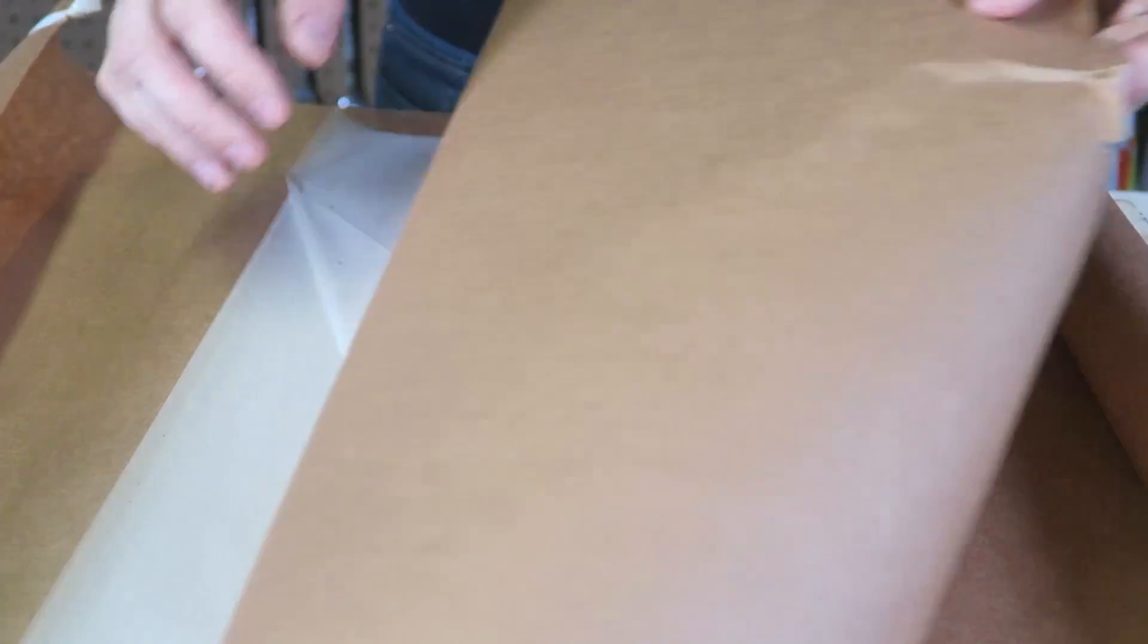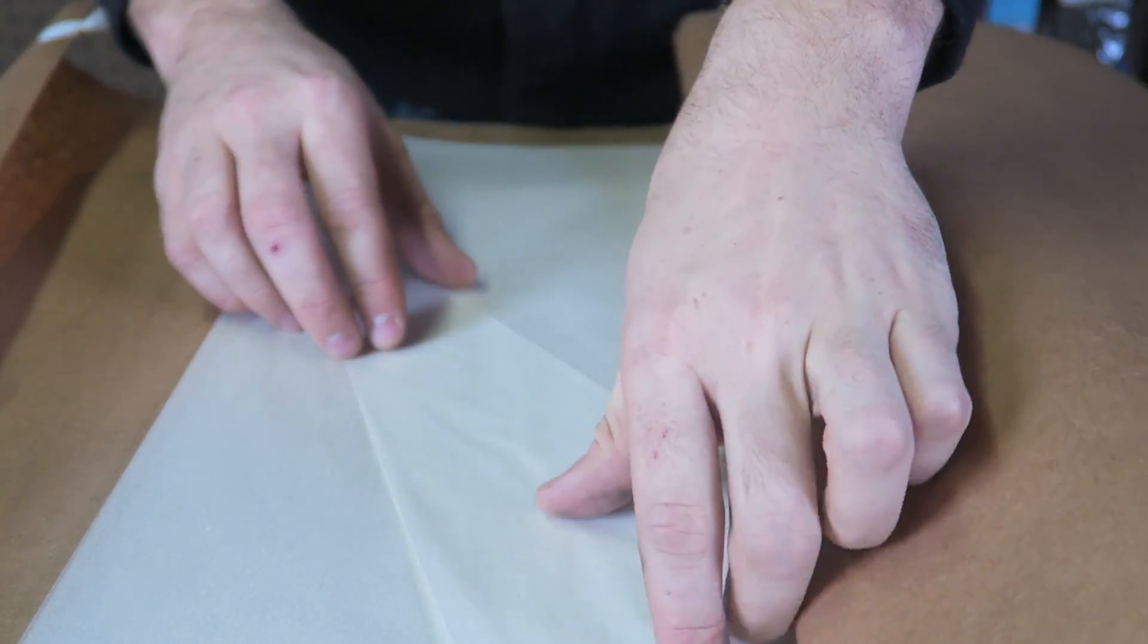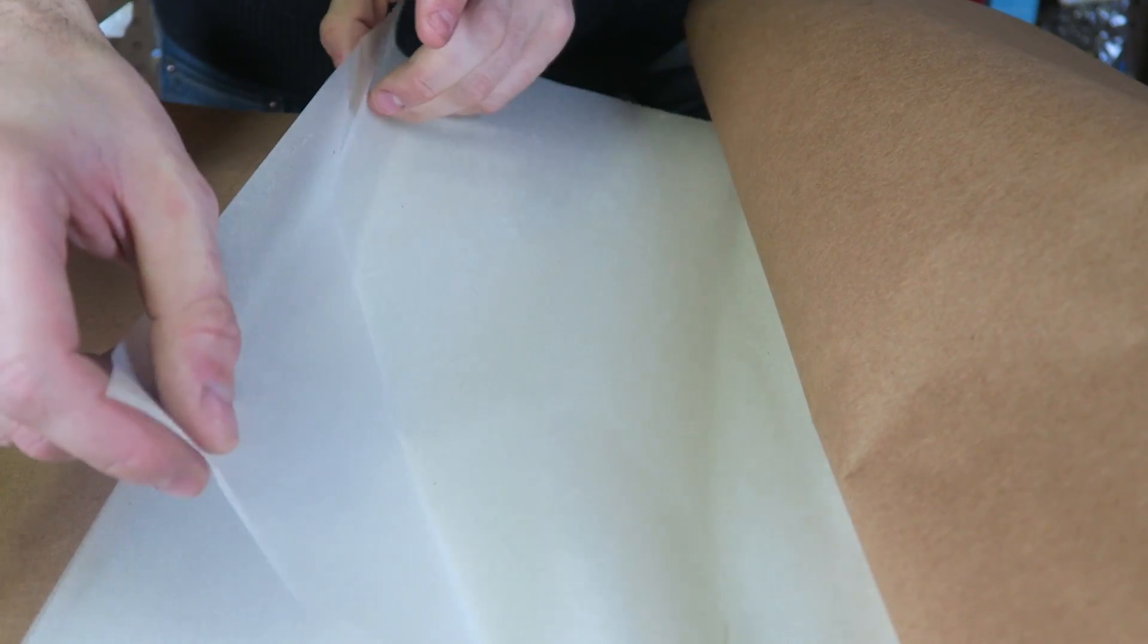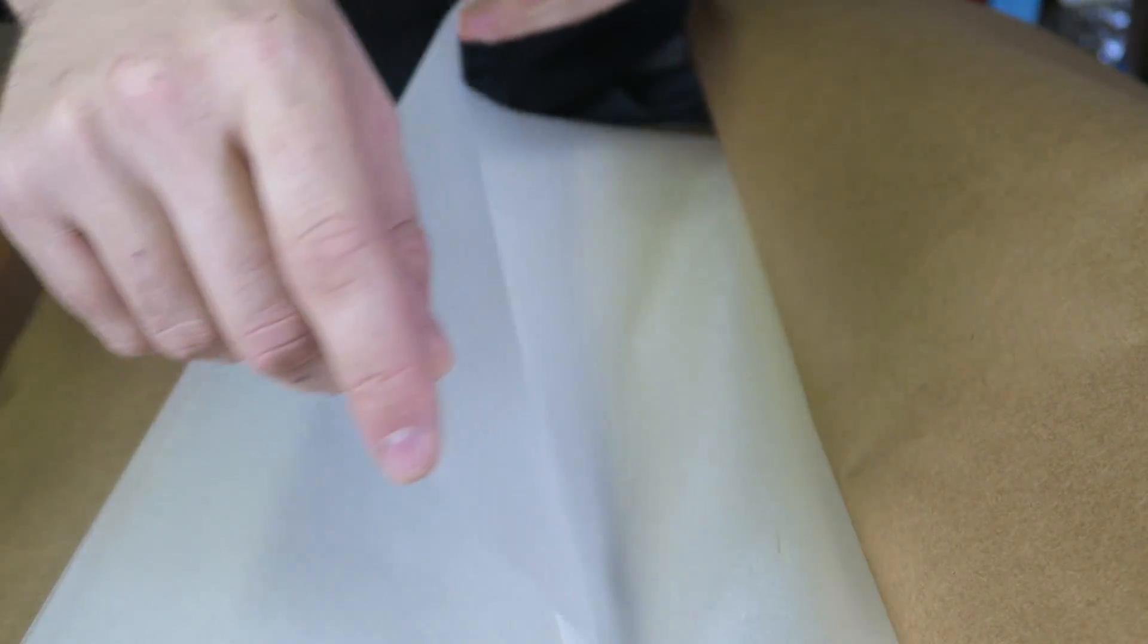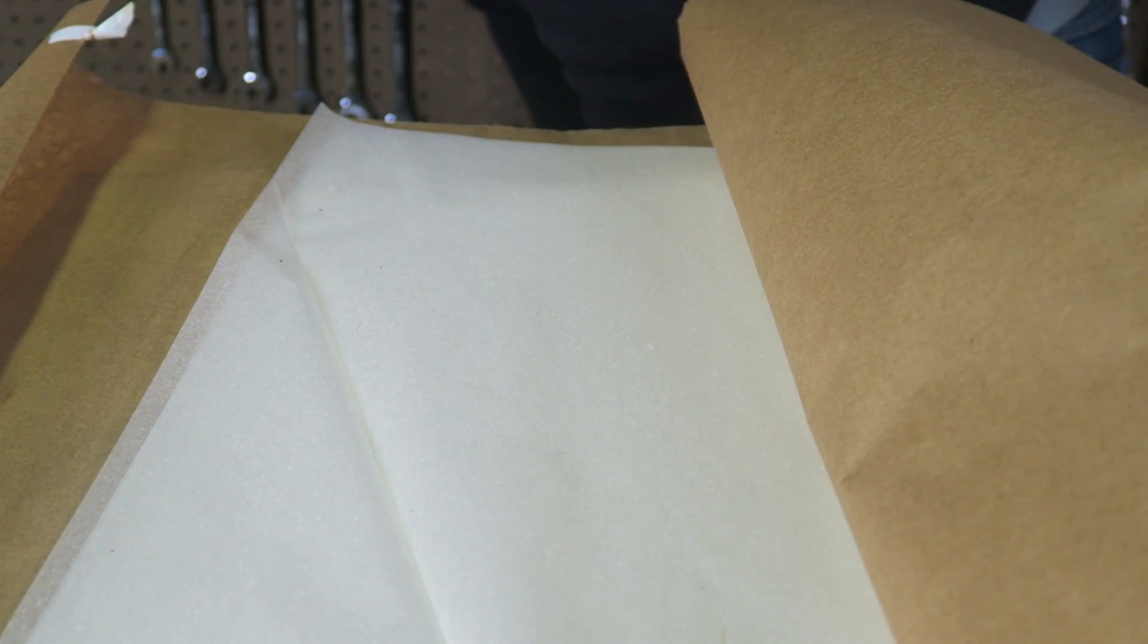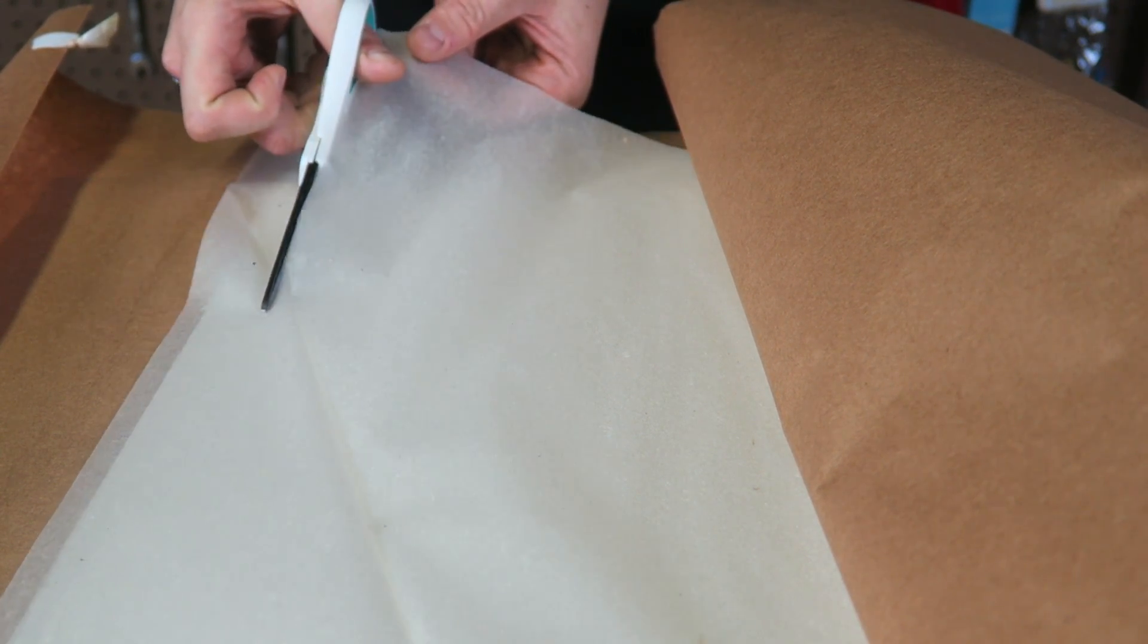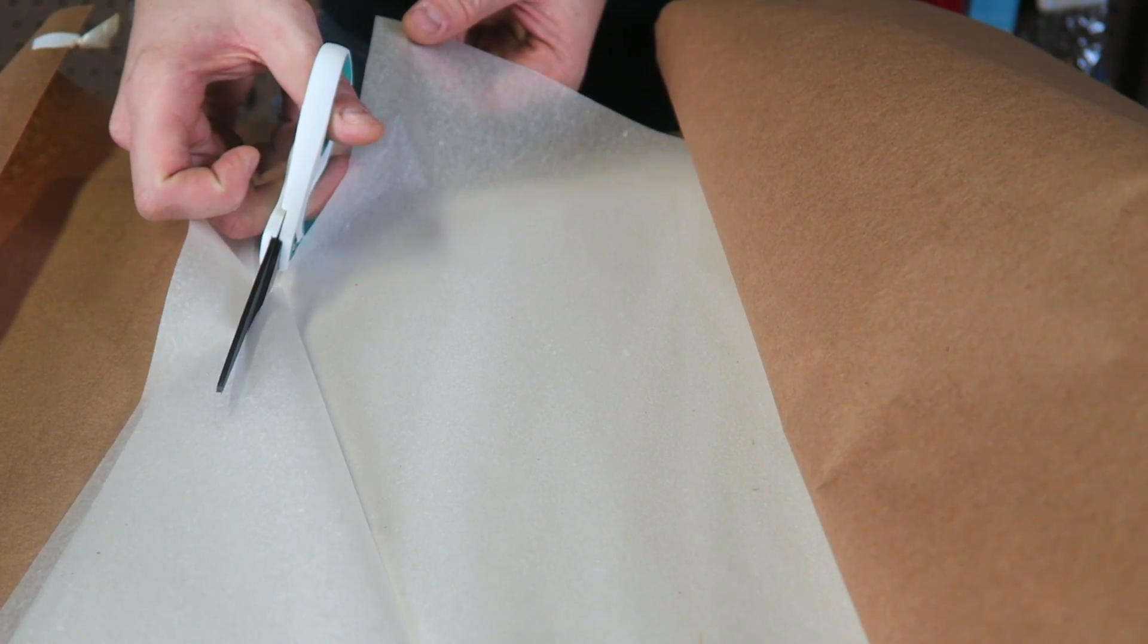First of all, we're going to need Japanese Gampy tissue paper. I ordered it online. I'll put in the description what it's actually called. I need scissors and I cannot find any. As you can see, it's a lot of paper, so I can really make a lot of fire fuses really cheap and easy.